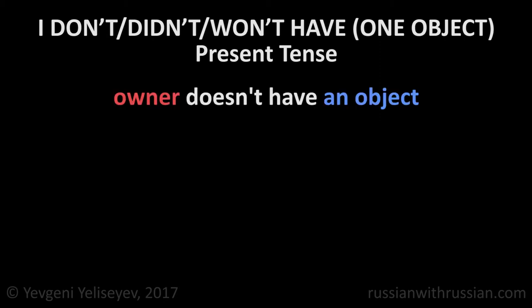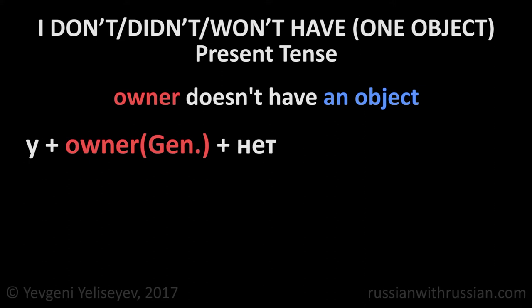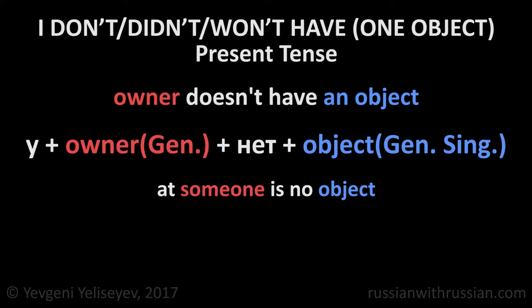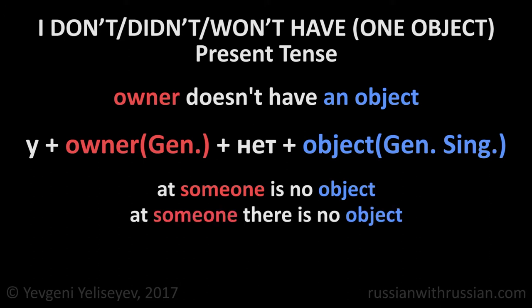Let's go. In order to say that someone doesn't have one object, we use the preposition У with the name of the owner in the genitive case, add the word НЕТ and put the name of the object that we don't have in the genitive singular form. НЕТ was formed from the expression НЕЕСТЬ, meaning 'is not.' That's why this construction literally means 'at someone is no object,' or 'at someone there is no object.'